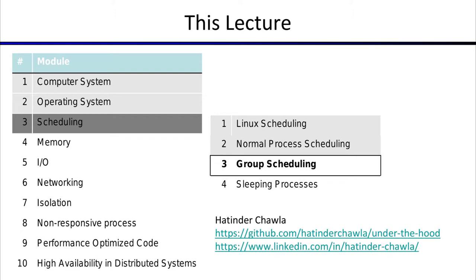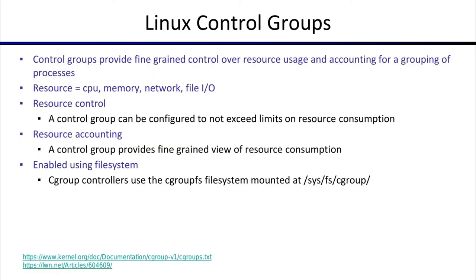An important concept we will introduce today — and apply to more than just scheduling — is Linux control groups. Linux control groups provide fine-grained control over resource usage and accounting for a grouping of processes. This is where grouping processes together and putting a common constraint on all of them comes in.